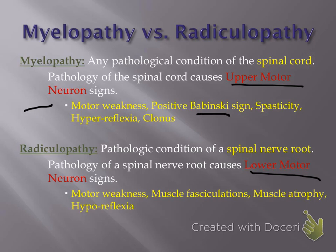A Babinski sign — the way you elicit a Babinski response is to take something like the back end of your reflex hammer, stroke it up the bottom of the patient's foot, and watch what the toes do. With a positive or abnormal Babinski sign, you are going to see the large toe come up, and the smaller toes will flare or fan out. This is abnormal and can suggest spinal cord pathology.